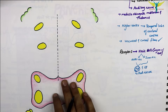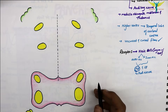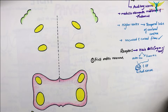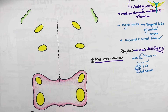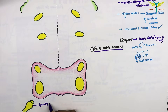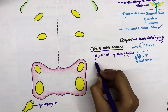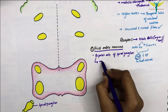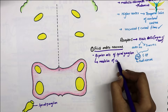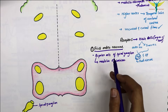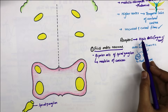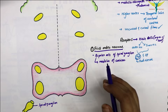The first order neurons of the auditory pathway are the bipolar cells of the spiral ganglion, situated in the modiolus of the cochlea. The peripheral short processes, or the dendrites of these bipolar cells, are distributed around the hair cells of the organ of Corti as afferent nerve fibers.